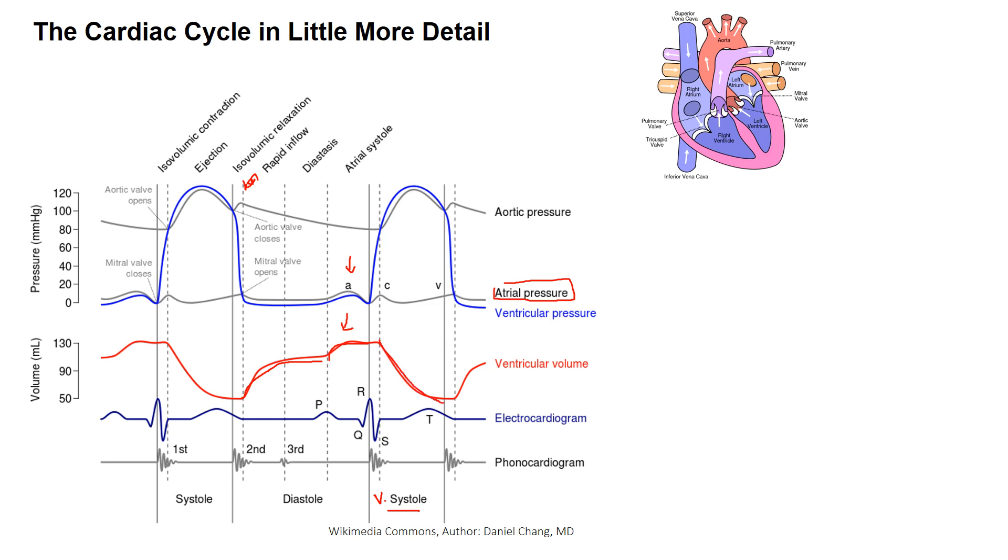At the end of ejection, the aortic valve closes here. The peak systolic arterial blood pressure is called systolic pressure. The minimum diastolic pressure which occurs at the very end of diastole is called diastolic pressure. This diagram also shows you how heart sounds and events in the electrocardiogram line up with events of the cardiac cycle.